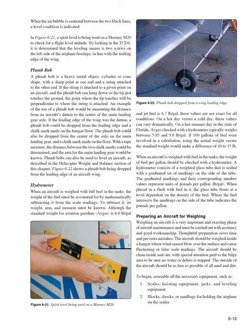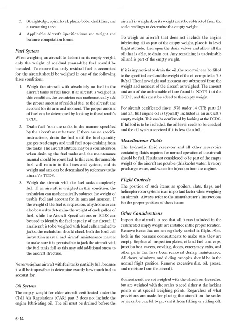Preparing an Aircraft for Weighing: Weighing an aircraft is an important and exacting phase of maintenance. The aircraft should be weighed inside a hangar where wind cannot affect scale readings, be clean inside and out, with special attention to the bilge area. Assemble all necessary equipment: (1) scales, hoisting equipment, jacks, and leveling equipment; (2) blocks, chocks, or sandbags; (3) straight edge, spirit level, plumb bobs, chalk line, and measuring tape; (4) applicable aircraft specifications and weight and balance computation forms. When weighing to determine empty weight, only the weight of residual fuel should be included.